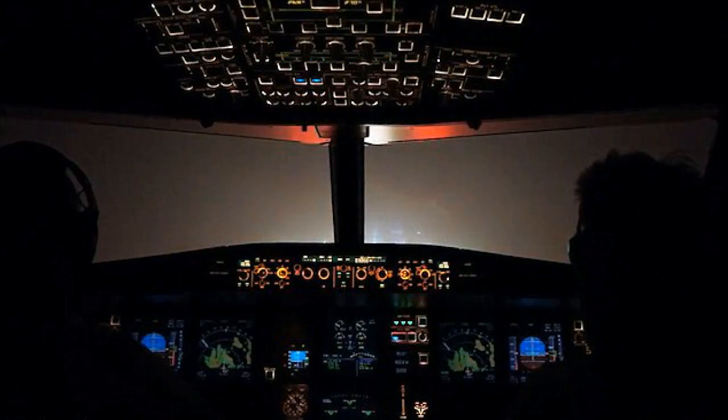However, if the visibility is right on limits and the pilot cannot see the lights at decision altitude, the pilot will go around. This is why passengers wonder why we have gone around when they can see the ground. It is because we cannot see the runway or the approach lights.